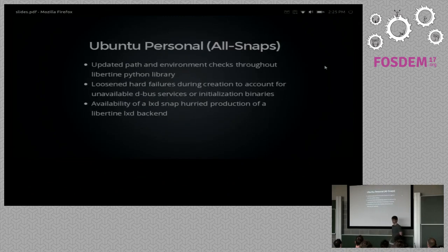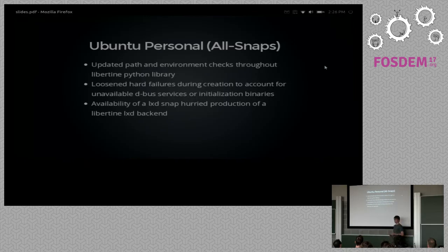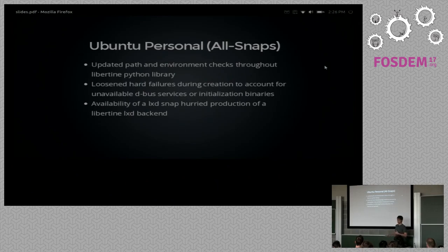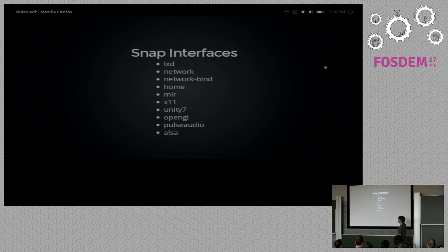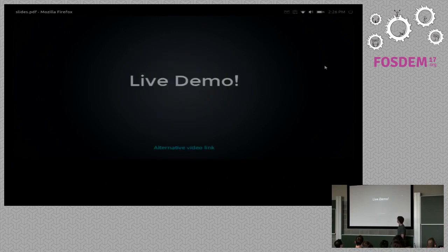Our end goal has always been running classic apps in a completely confined system, which brings us to SNAPs. SNAPs are a packaging system to allow complete confinement. We need to update some paths and environment variables to be more flexible for SNAPs, and we need to make some architectural changes to support the LXD container backend. The LXD Snap is available for us to use. In order to access resources in SNAPs you have to connect to interfaces, and we connect to quite a few: LXD to connect to LXD, network and network-bind to connect to network sockets, home to connect to user home directories, and others for audio and graphics.